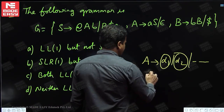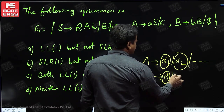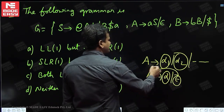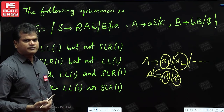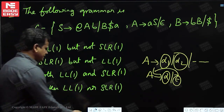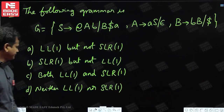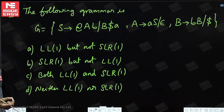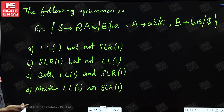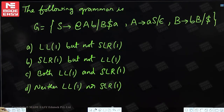If one of them is epsilon, find the first of alpha and find the follow of A. First of alpha and follow of A — if they have common elements, then also not LL(1). You just try this one. I will give you a few seconds — pause and try, then go for the solution.